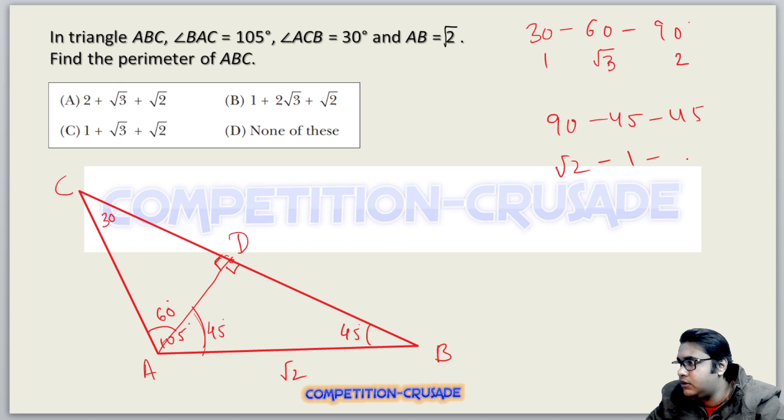So the sides are root 2, one, one. You can already see that the side corresponding to 90 degrees is root 2, which means that side AD is one and side DB is also one.